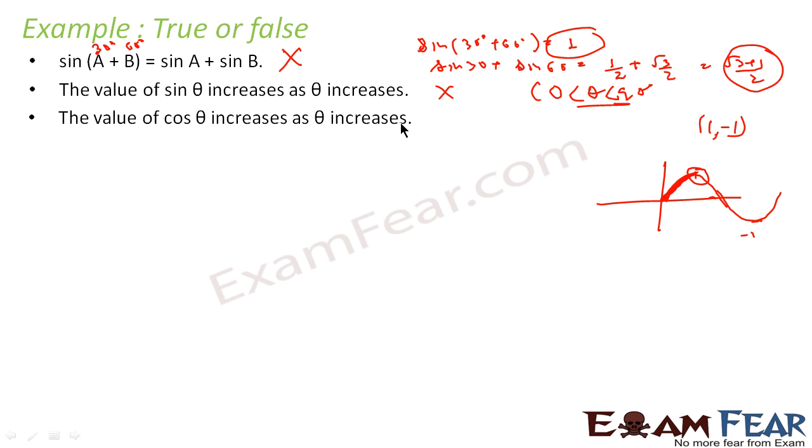The value of cos θ increases as θ increases is false. Even for this range, because cos 0° is 1, when you see this is 1, √3/2, 1/√2, 1/2, 0. This is the value of cos 0°, cos 30°, 45°, 60°, 90°. So we are seeing the value is decreasing instead of increasing. So the value of cos θ decreases as θ increases from 0° to 90°.